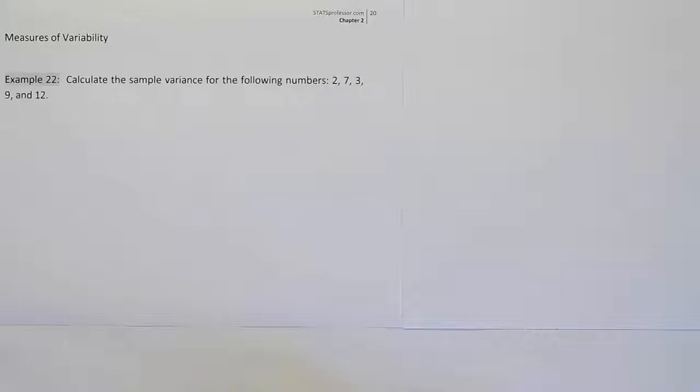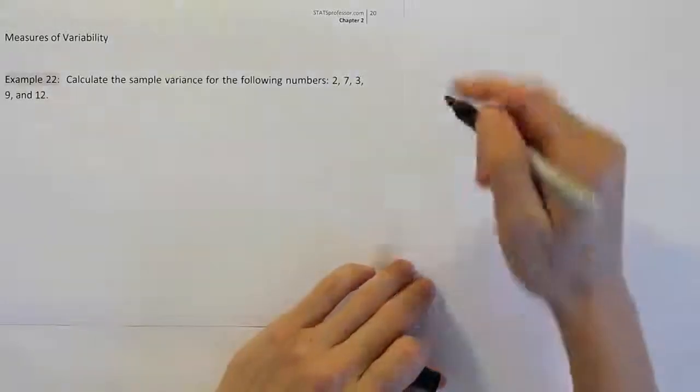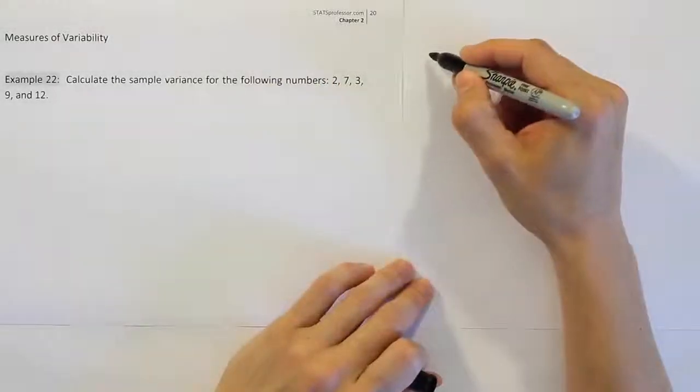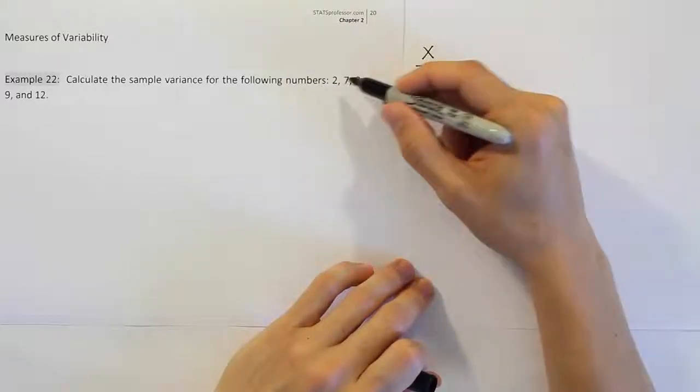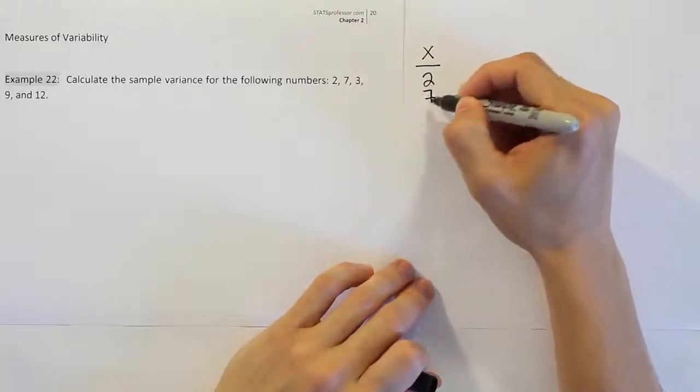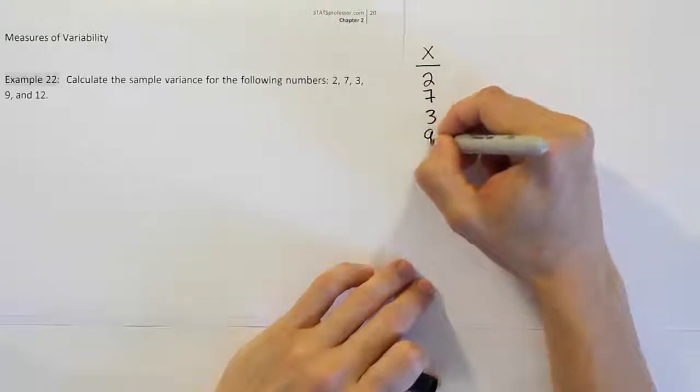Alright, to do this problem, what you want to do is simply create two columns. So when they ask you to calculate the variance, you want to create a column first that contains all the data that they gave you. So we're going to do 2, 7, 3, 9, and 12.